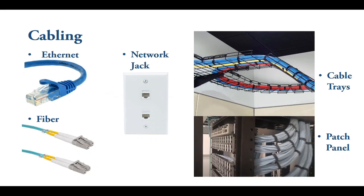You have the cabling — the Ethernet cables, the copper cables, which have the RJ45 connector. One end connects to the computer and the other end connects to the wall jack or network jack. The cable then runs behind the wall, up in the ceiling on cable trays, and down to a computer room or a network closet.